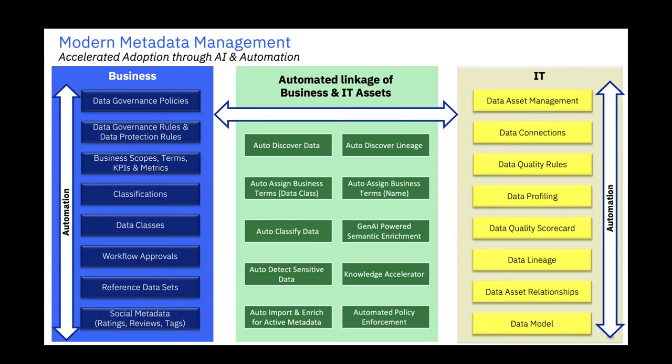Let's jump right in. Global Data Strategy and Dataversity partner each year — for the past six years or so — on a survey on trends in data management. Metadata is always one of the top priorities. This question asked what is a priority, and metadata management was definitely in the top five — number three. What was nice to see is that it has increased by 20% year over year.